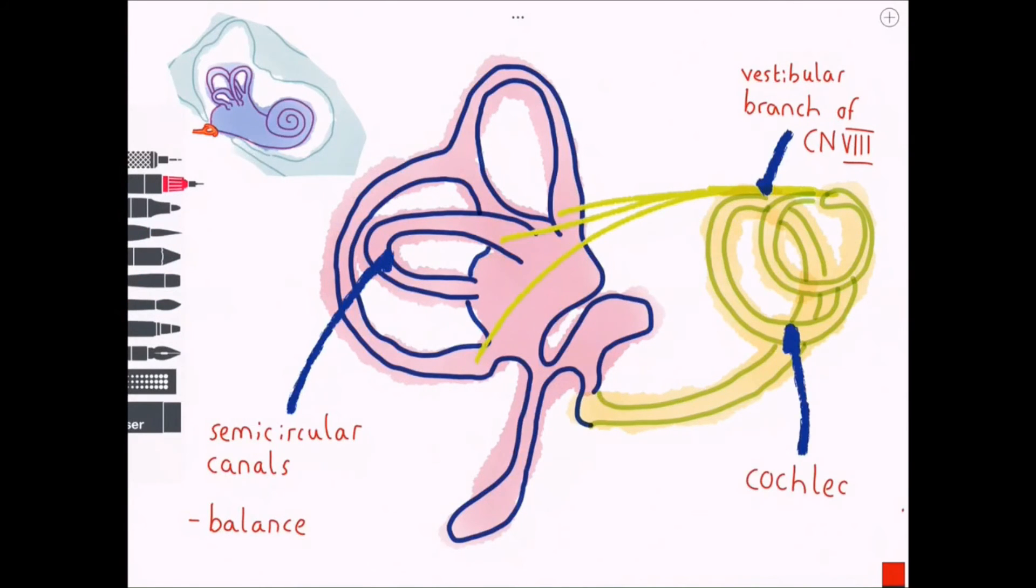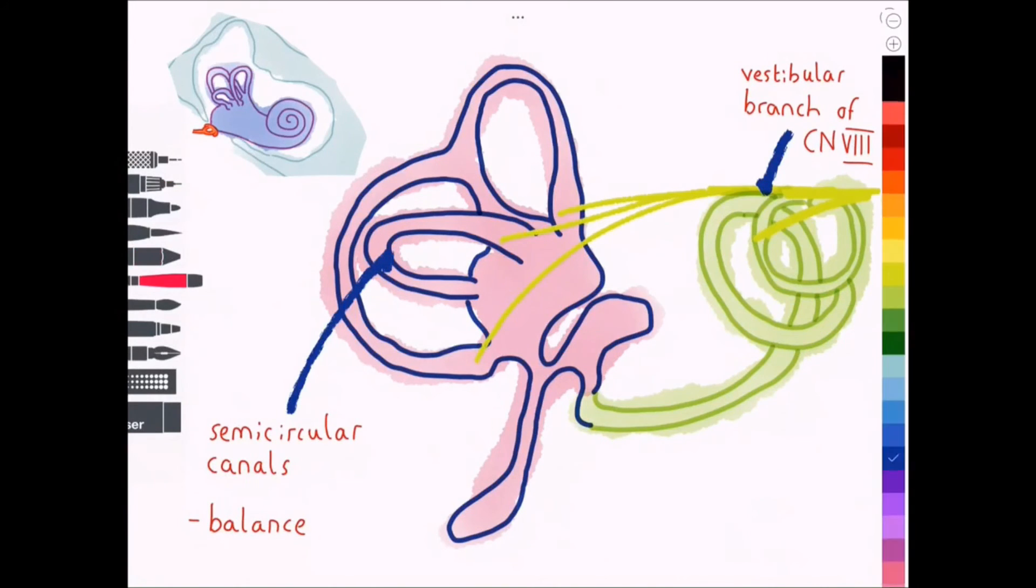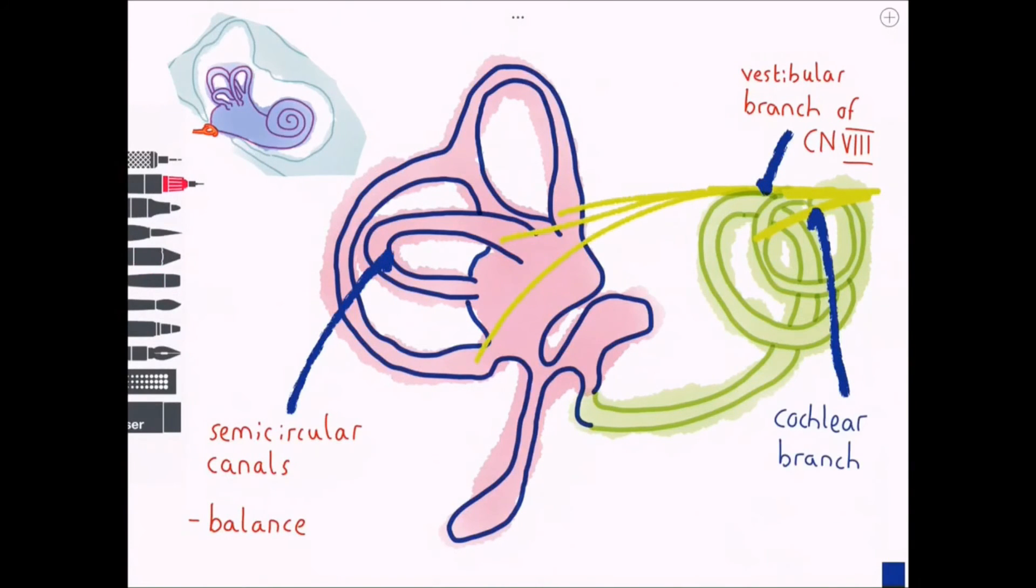This impulse travels along the auditory nerve or the cochlear branch of cranial nerve 8 to our brains specifically the superior temporal gyrus. You might have heard of cancer of the auditory nerve and it's called an acoustic neuroma. It can present as unilateral hearing loss and tinnitus in a patient.